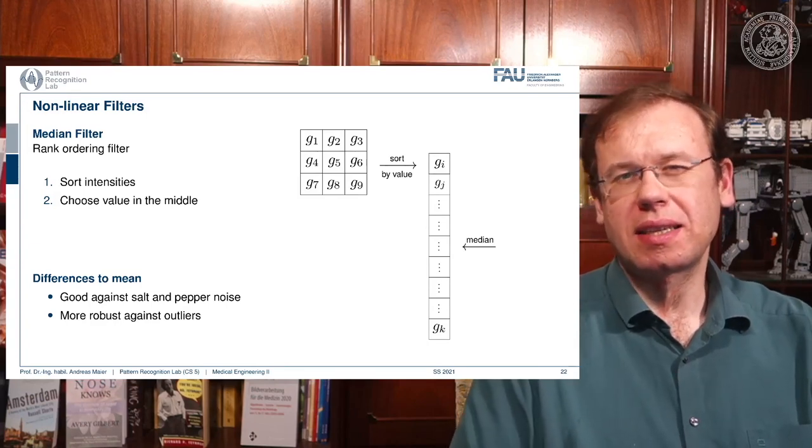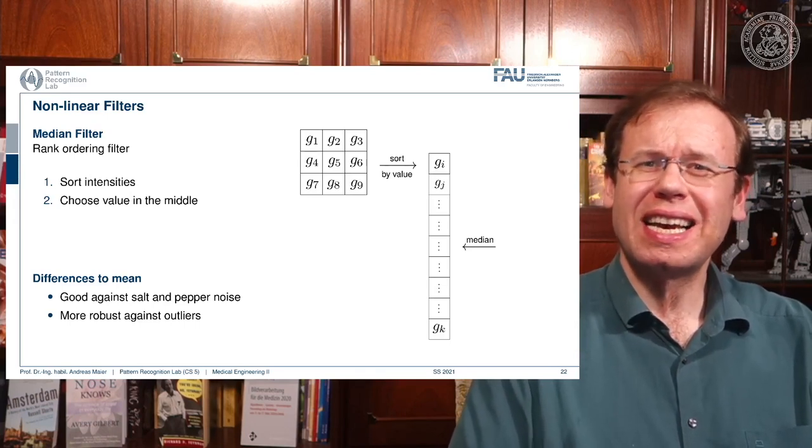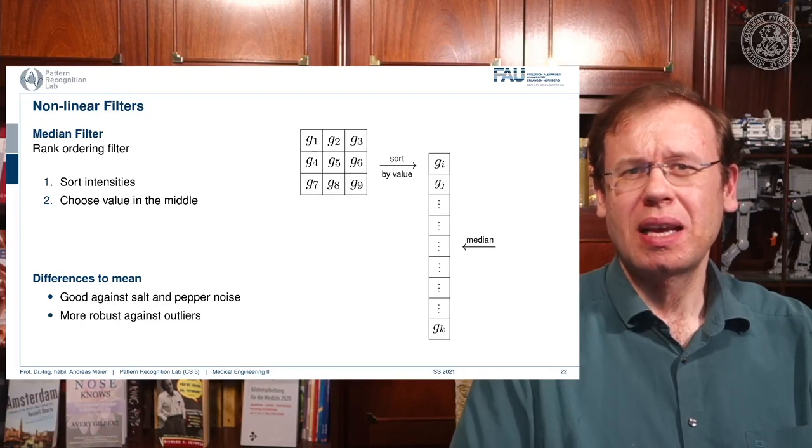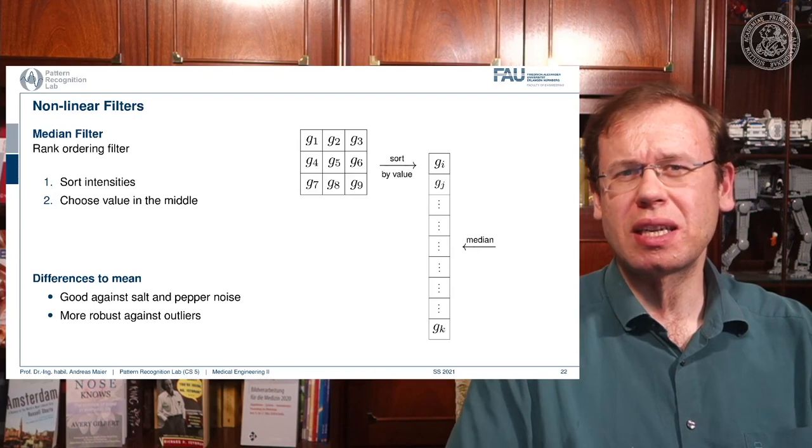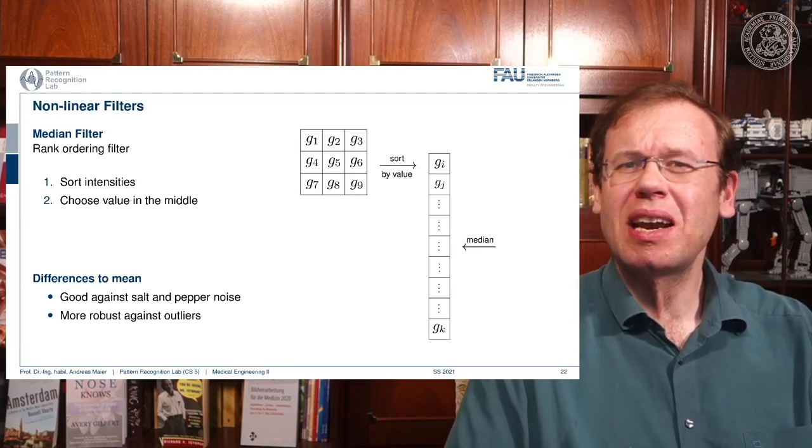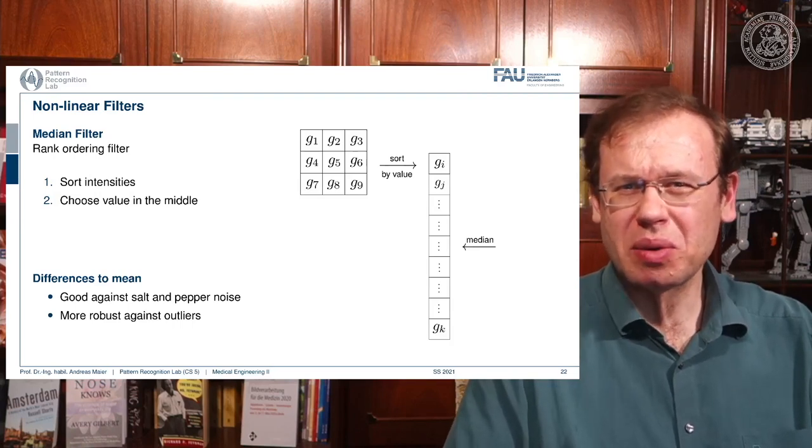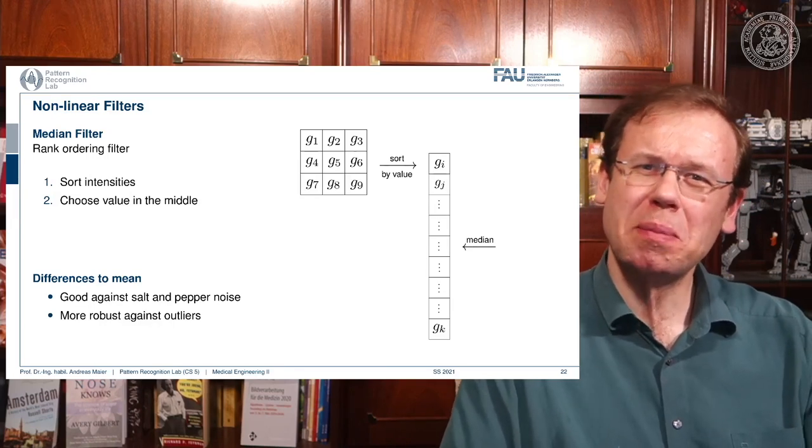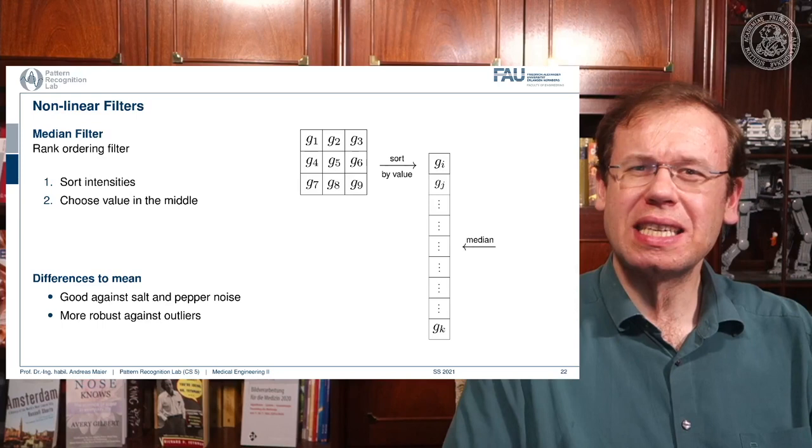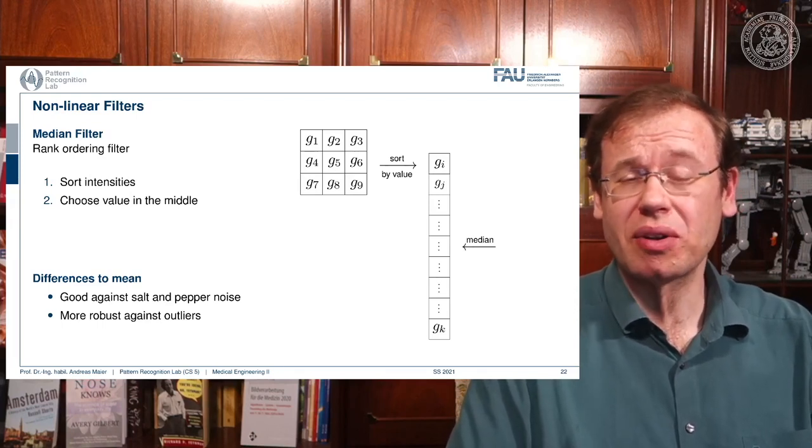Now the median is a very useful statistical tool, and in particular it is very robust against outliers. So if you have a non-Gaussian distribution, then you will realize that the mean and the median can be very far apart from each other. And if you compute the mean and you have very high or very low values, they will be biased towards them.